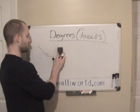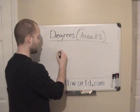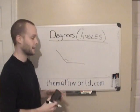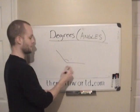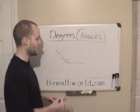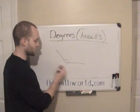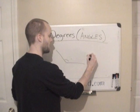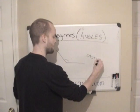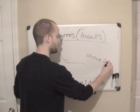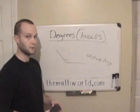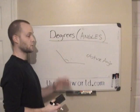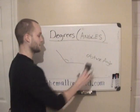Now we've talked about the right angle at 90 degrees. If it's greater than 90 — as you can see here it actually comes out a little bit — if it's greater than 90 but not quite a straight line all the way, this is called an obtuse angle. So if they ask you to find the obtuse angle, it's going to be farther out than the right angle.